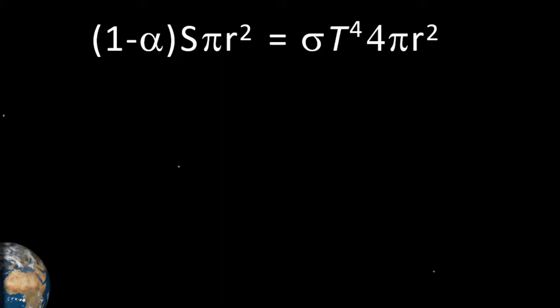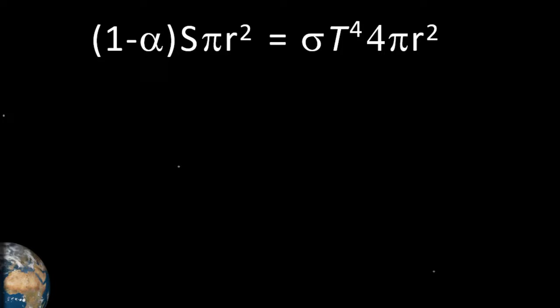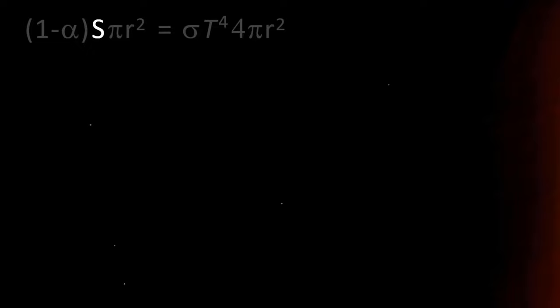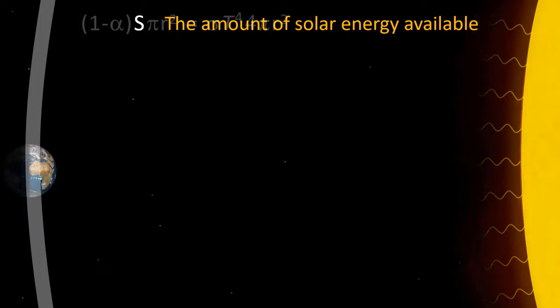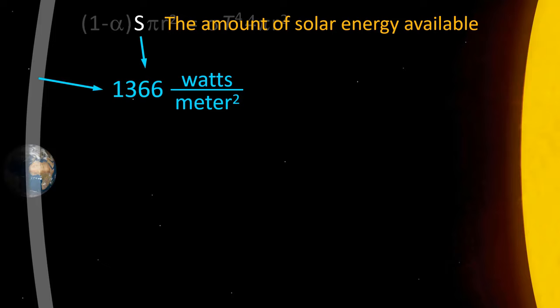The Stefan-Boltzmann law is modified to accommodate the Earth-Energy Balance Model, and this equation is a key step toward understanding global warming. S represents solar flux — the amount of solar energy available at Earth's distance from the Sun, measured at about 1366 watts per square meter. Think of it in terms of light bulbs: the average LED bulb outputs about 8 watts, making 1366 watts equivalent to about 170 light bulbs for every square meter of space. One watt is one joule per second, and the average person's body uses about 90 joules per second, or 90 watts, to stay alive.